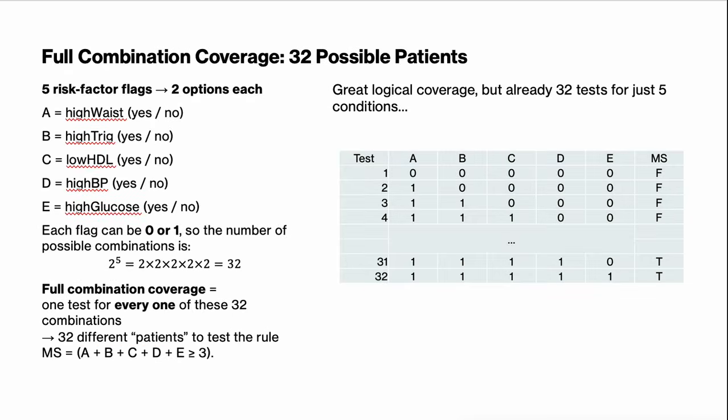On this slide I want to show what happens if we take a brute-force approach. We've got five boolean risk factors, A through E — each one can be either zero (false, the patient does not have this factor) or one (true, the patient has this factor). The number of possible cases is 2 to the power of 5, giving us 32 possible combinations. Full combination coverage means testing every one of those 32 combinations. Each row of this truth table is a unique patient — a different pattern of risk factors — and we check whether the system's decision matches the rule A + B + C + D + E ≥ 3. This gives excellent coverage, but the cost is 32 tests for just five conditions — and if we added more logic or factors, this number explodes.